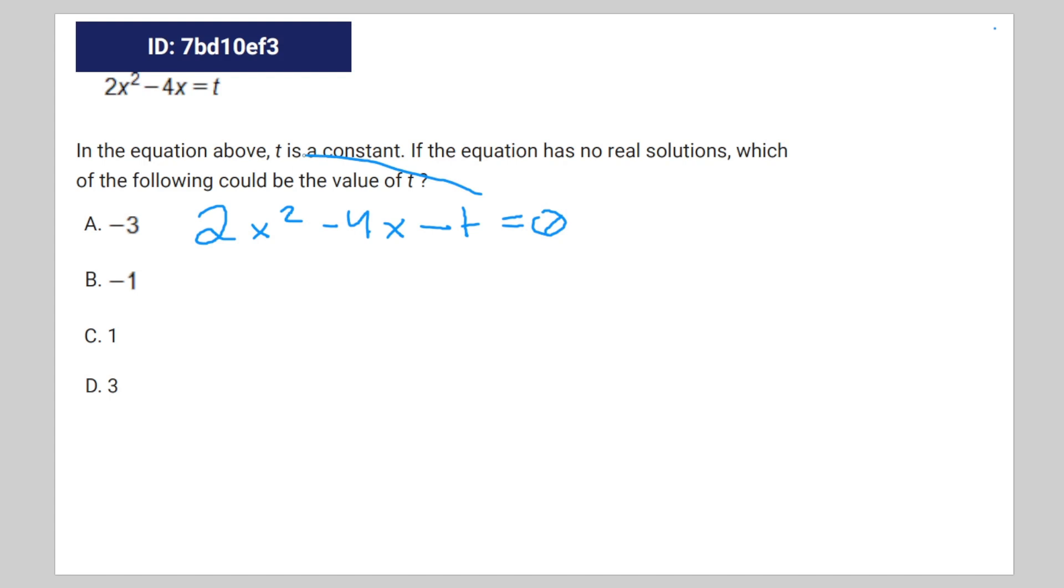And for these type of quadratic equations, we're going to use the discriminant, which is b squared minus 4ac. And in the situation that has no real solutions, it's going to be less than zero.